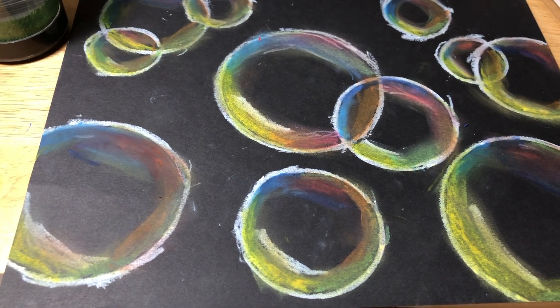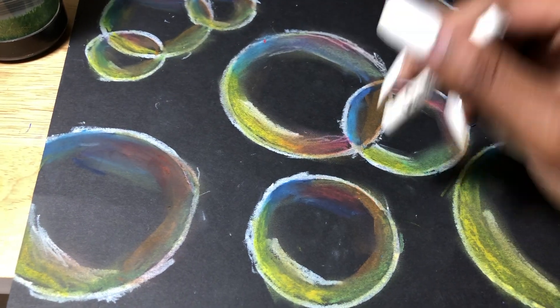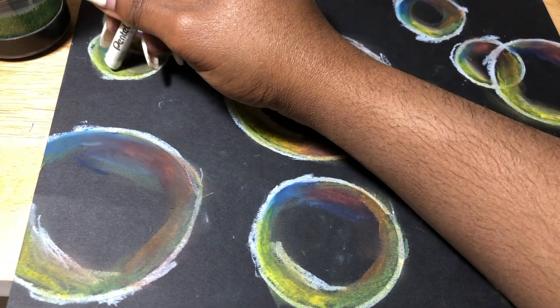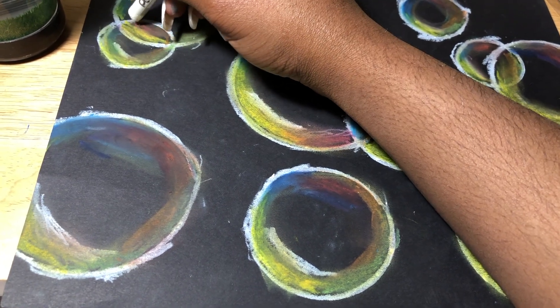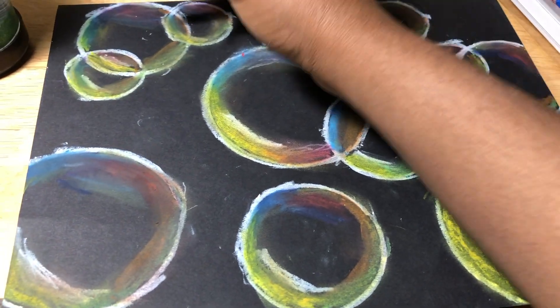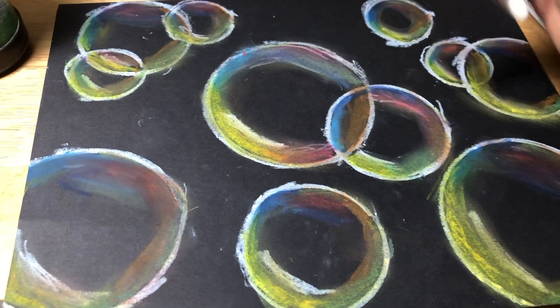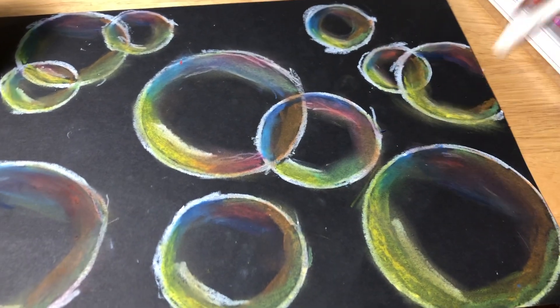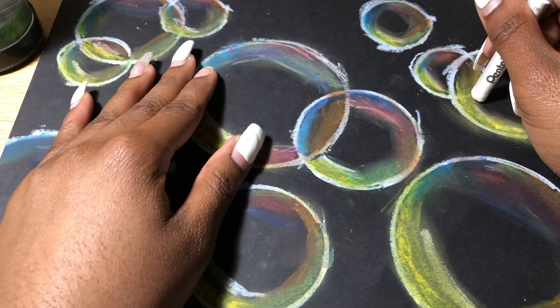My final step is I'm going to go back in a little bit. You're going to work some more after you smudge, just to kind of make sure that it is still visible, because that's what's going to allude to the spherical shape of a bubble.